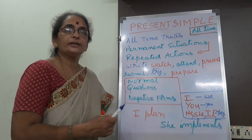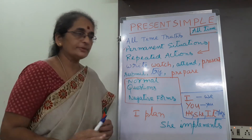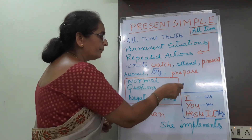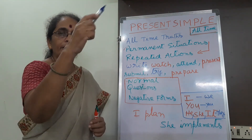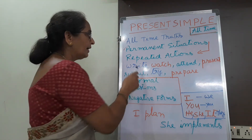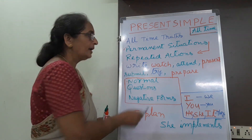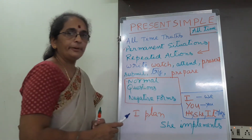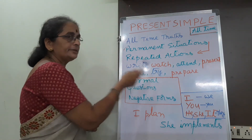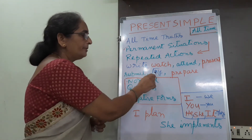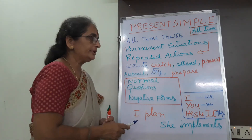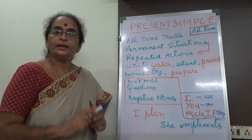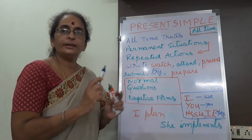You pronounce within yourself and practice. Now repeat the same verbs in negative form: I don't write the story, I don't watch the TV, I don't attend the meeting, I don't present PowerPoint, I don't submit the project, I don't try this calculation, I don't prepare the project. That is the negative sentence in the same tense.